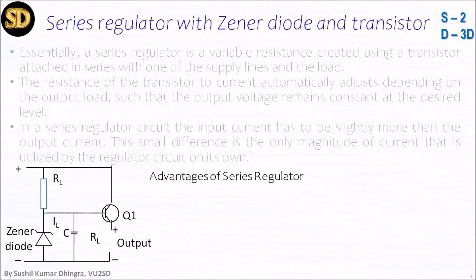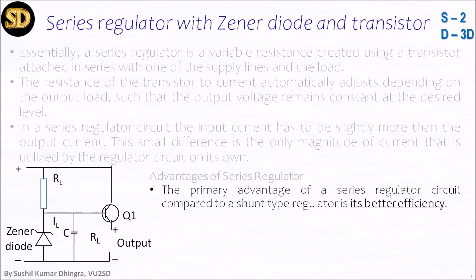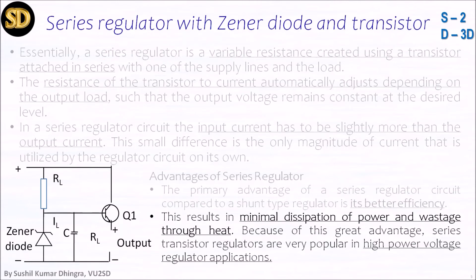The advantages of series regulators: the primary advantage of a series regulator circuit compared to the shunt type regulator shown in the previous slide is its better efficiency. The result is minimal dissipation of power and heat through the pass stage. Because of this great advantage, series transistor regulators are very popular in high power voltage regulator applications.